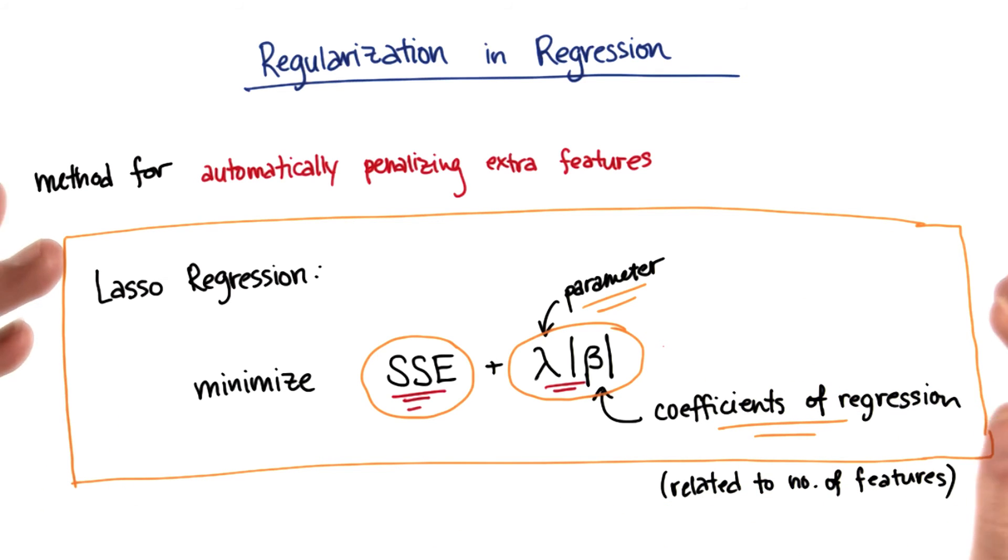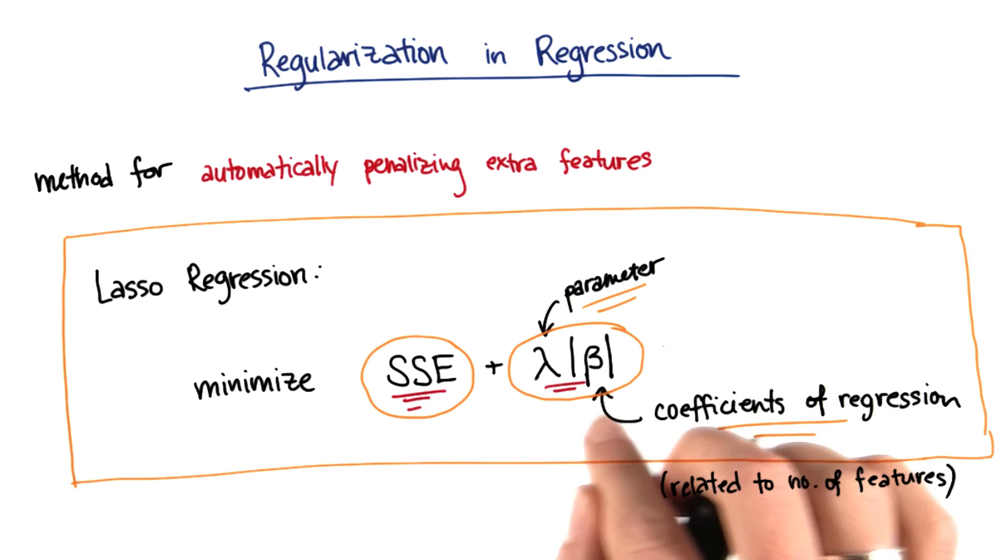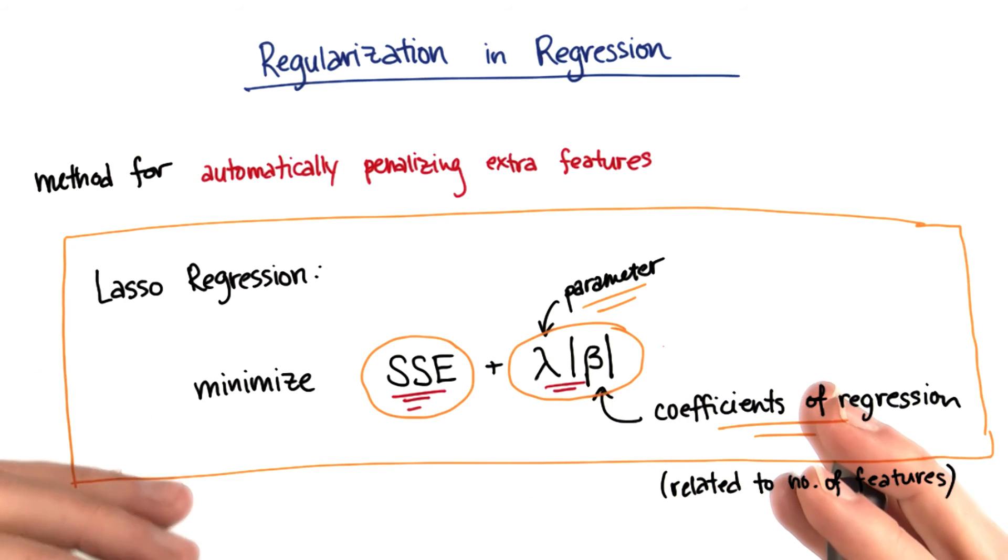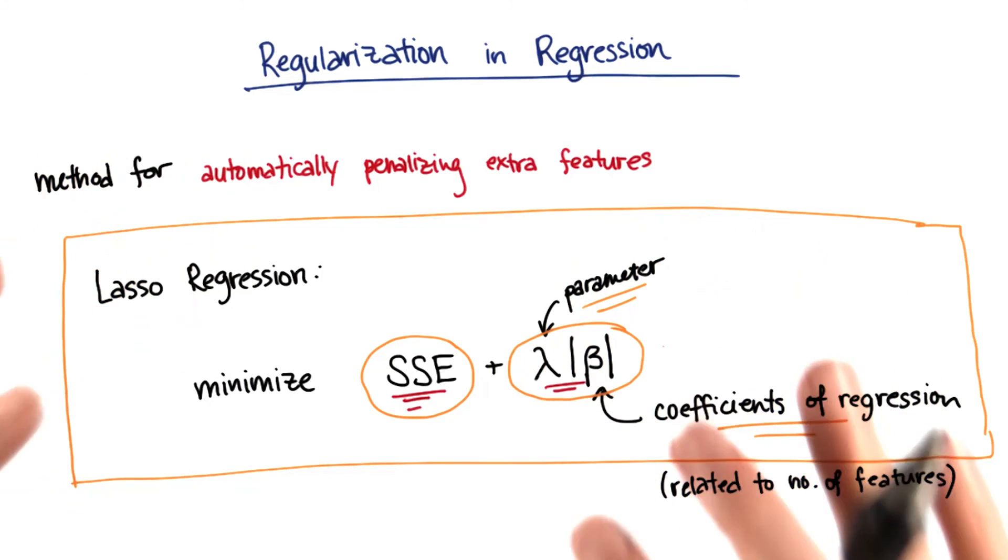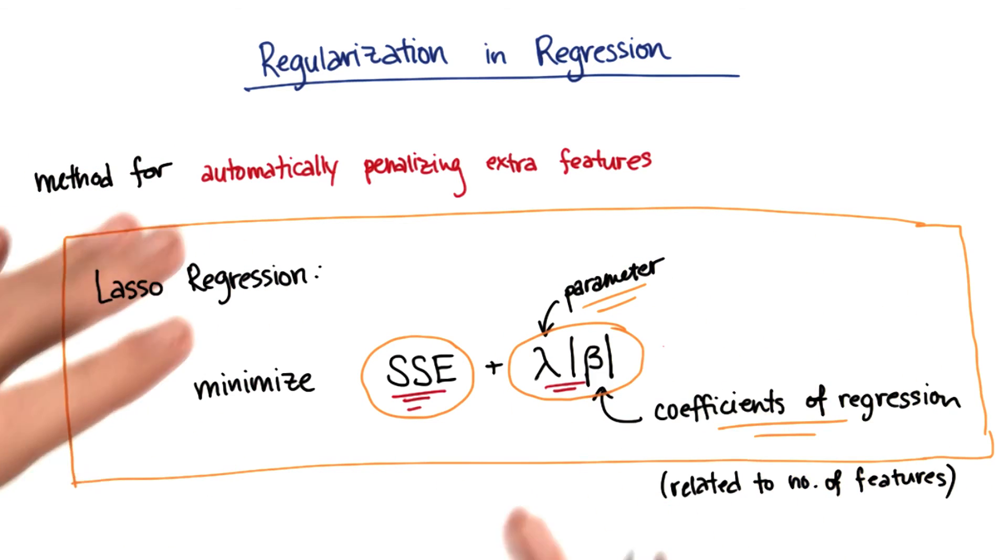What lasso regression does is it automatically takes into account this penalty parameter. In so doing, it helps you figure out which features are the ones that have the most important effect on your regression. Once it's found those features, it can eliminate or set to zero the coefficients for the features that don't help.